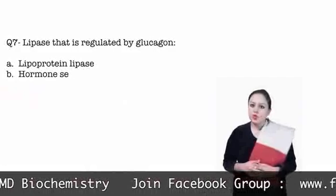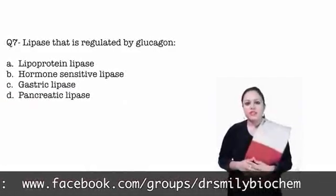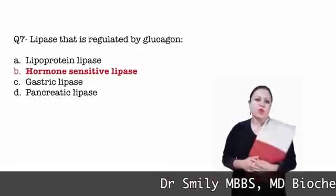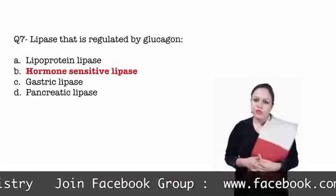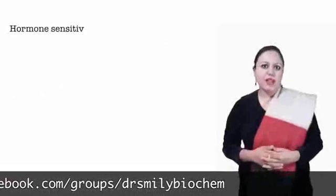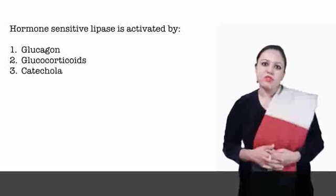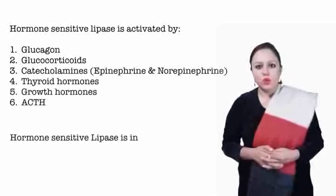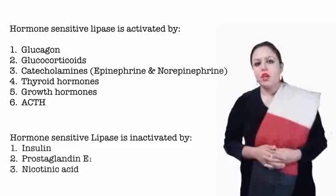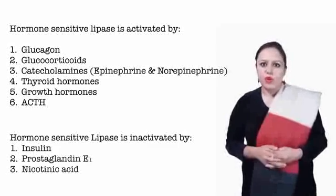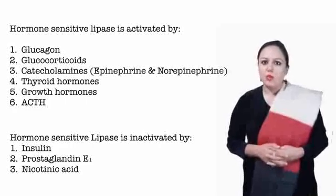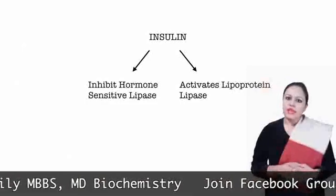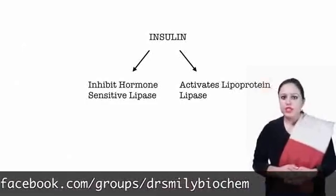Question number 7: the lipase that is regulated by glucagon — options are lipoprotein lipase, present in plasma acting on lipoproteins; hormone sensitive lipase, present in adipose tissue inside cells; and gastric and pancreatic lipases, present in the intestine. Glucagon acts on hormone sensitive lipase, so that is the answer. Hormone sensitive lipase is activated by glucocorticoids, catecholamines like epinephrine, growth hormone and ACTH, and is inactivated by insulin.